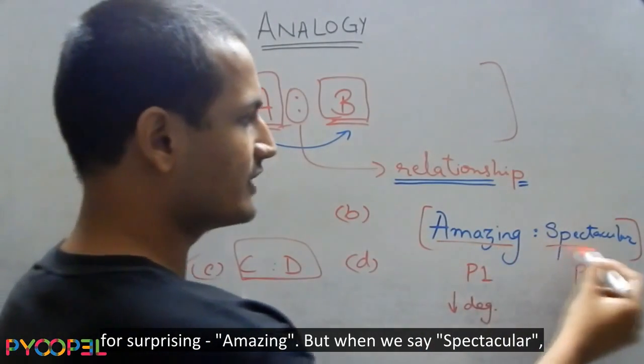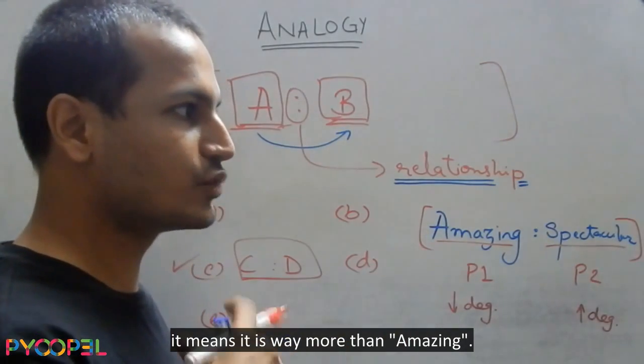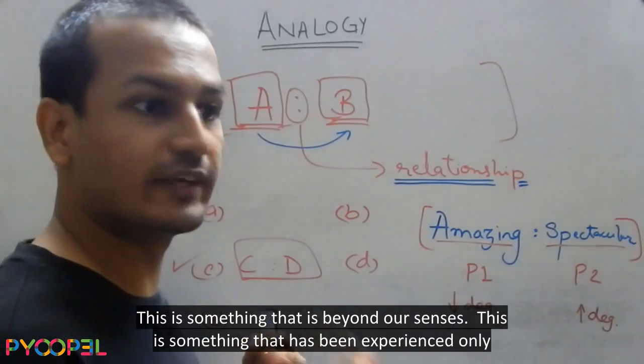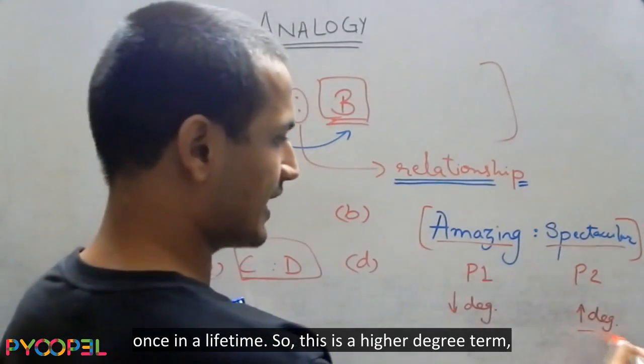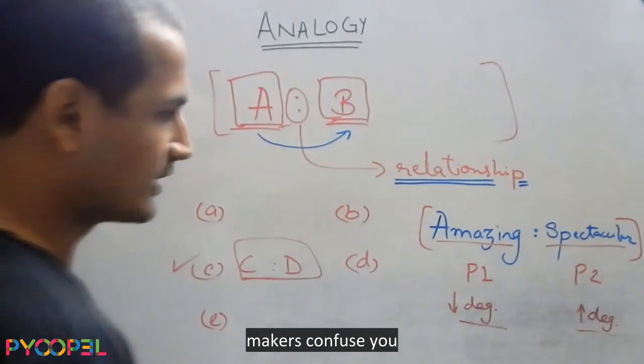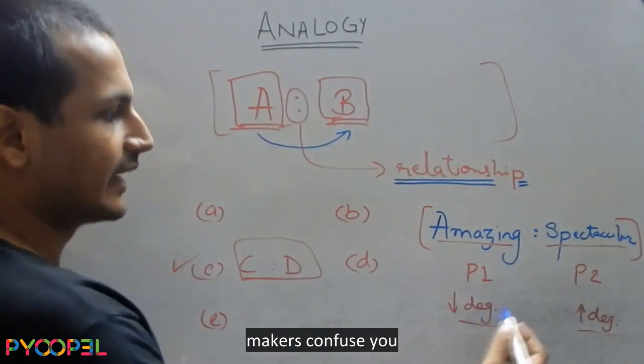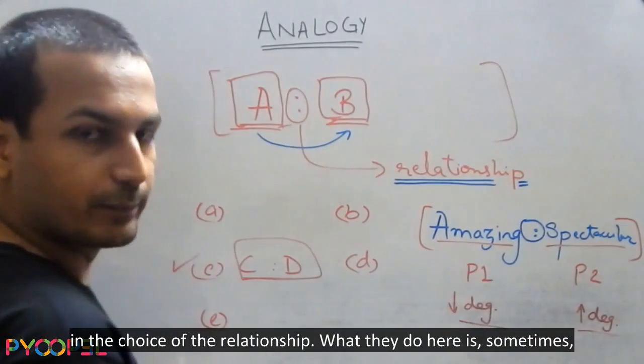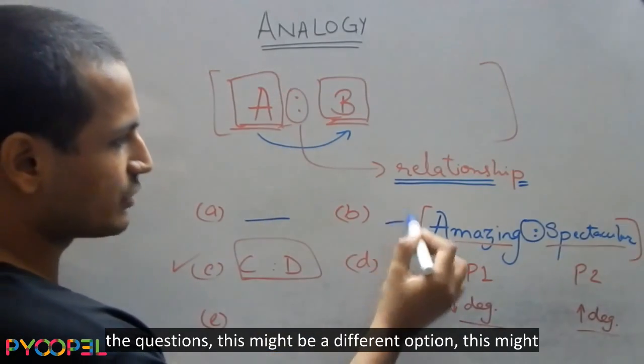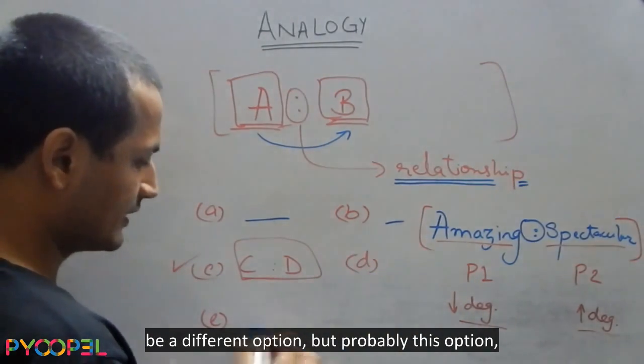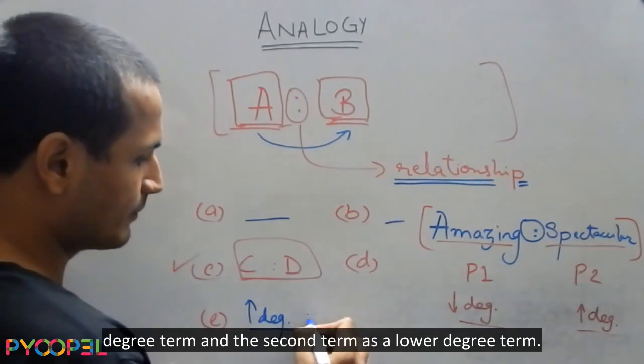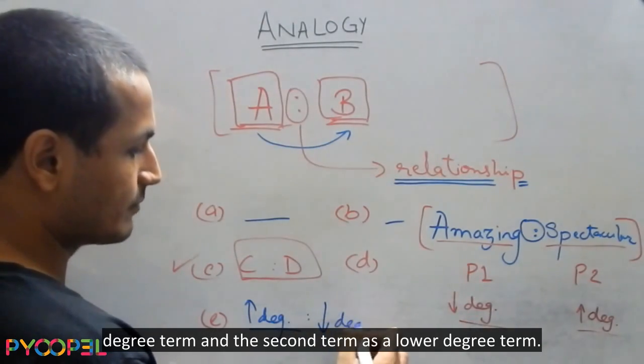But when we say spectacular, it means it is way more than amazing. This is something that is beyond our senses. This is something that has been experienced only once in a lifetime. So this is a higher degree term, this is a lower degree term. Now, the question makers confuse you in the choice of the relationship. What they do here is, sometimes the questions, this might be a different option, but probably this option would have the first term as a higher degree term and the second term as a lower degree term.